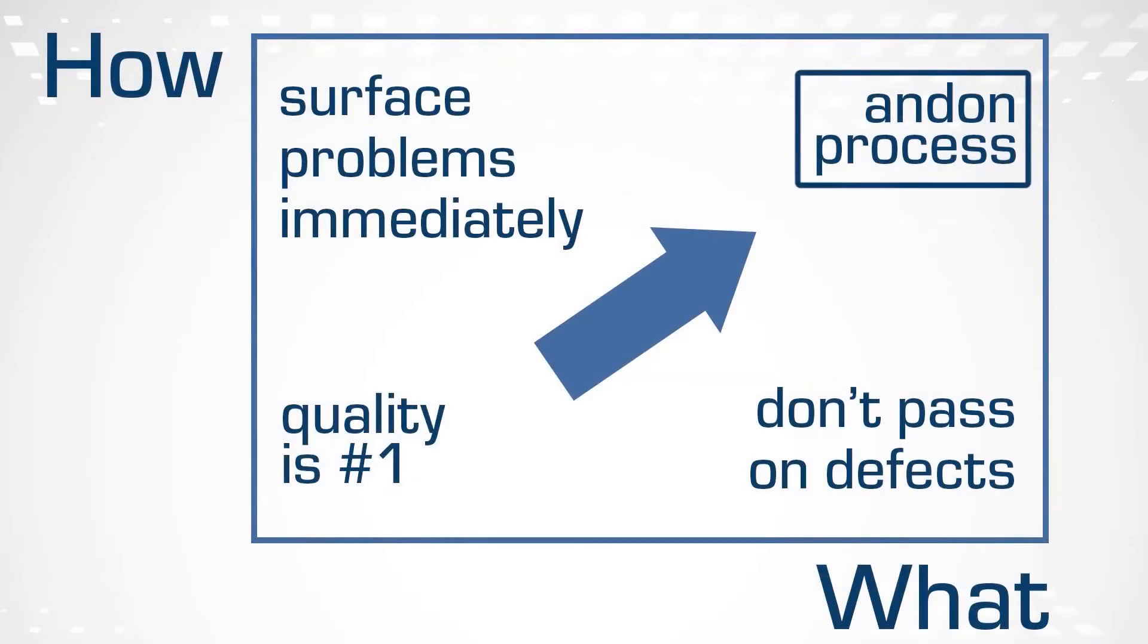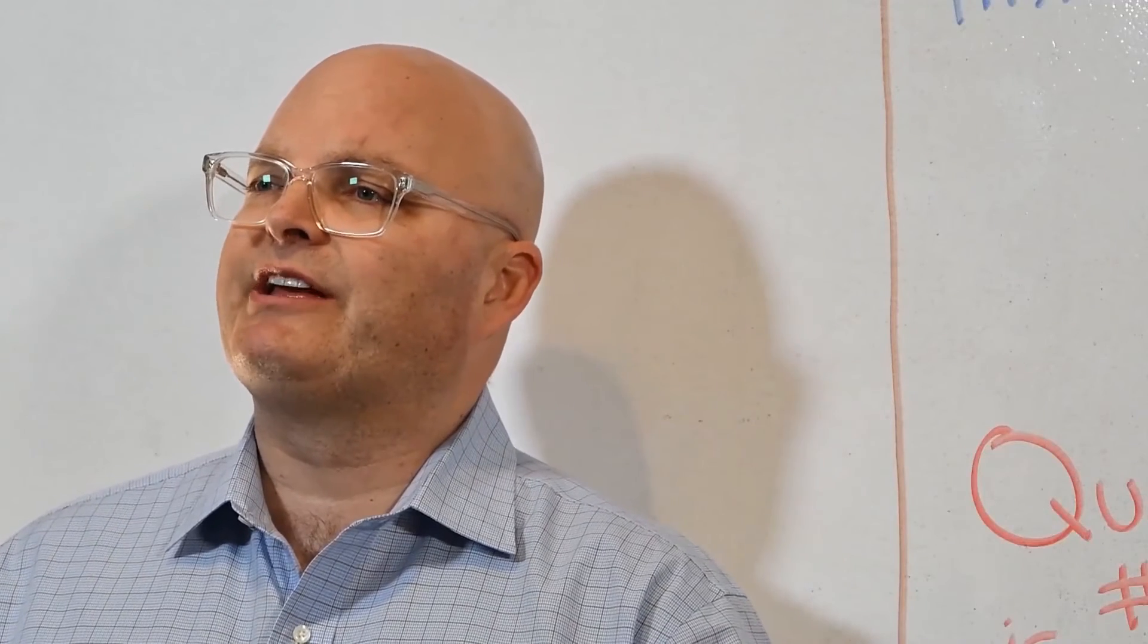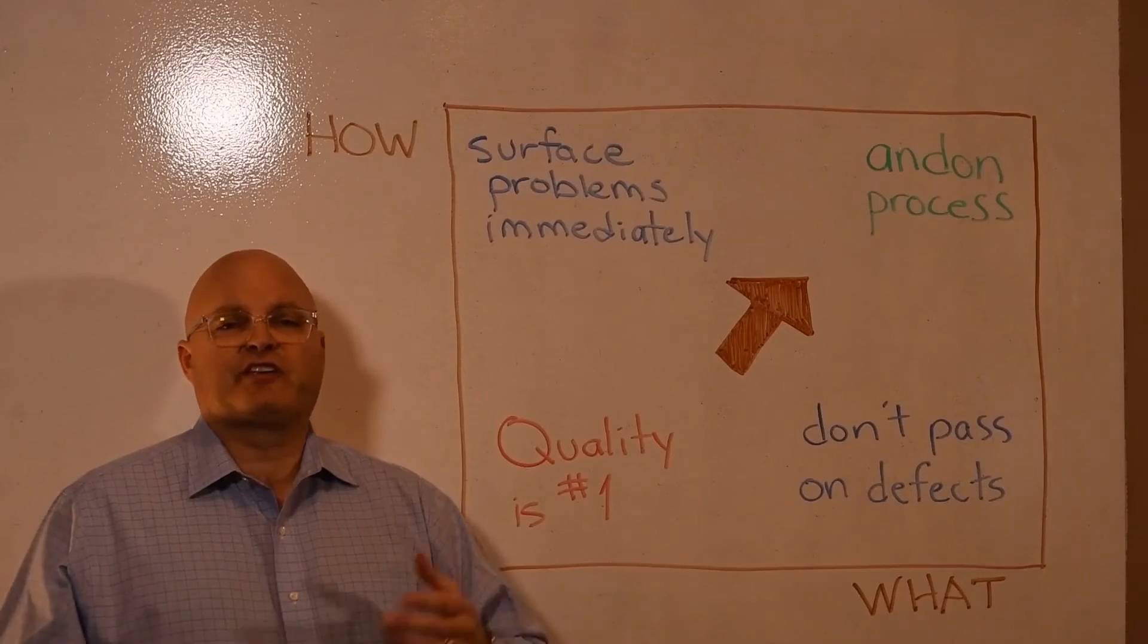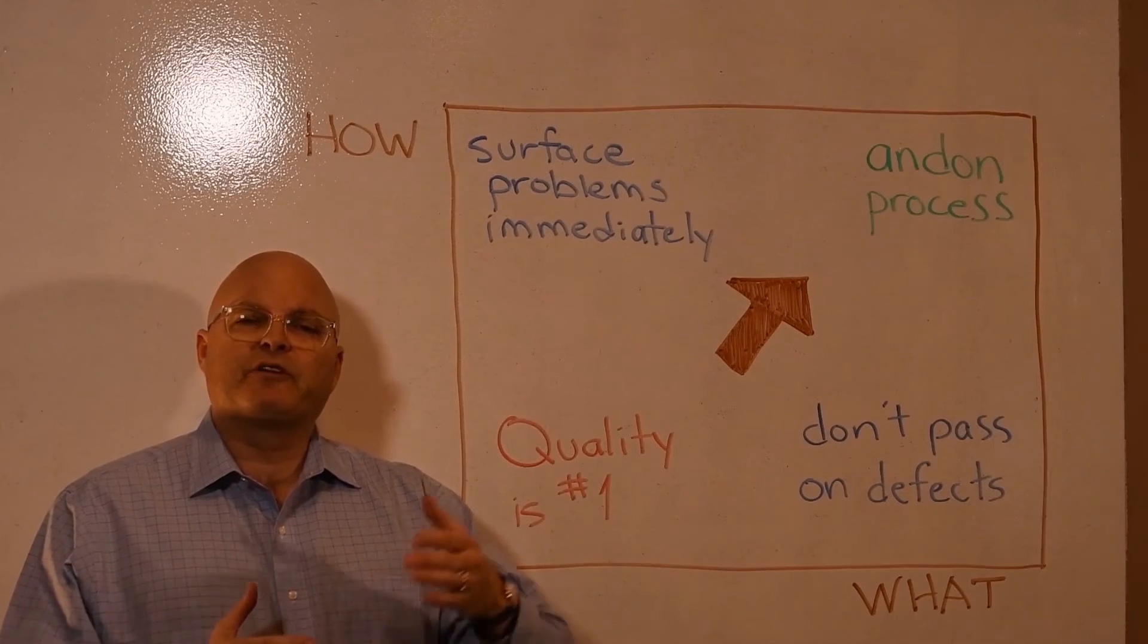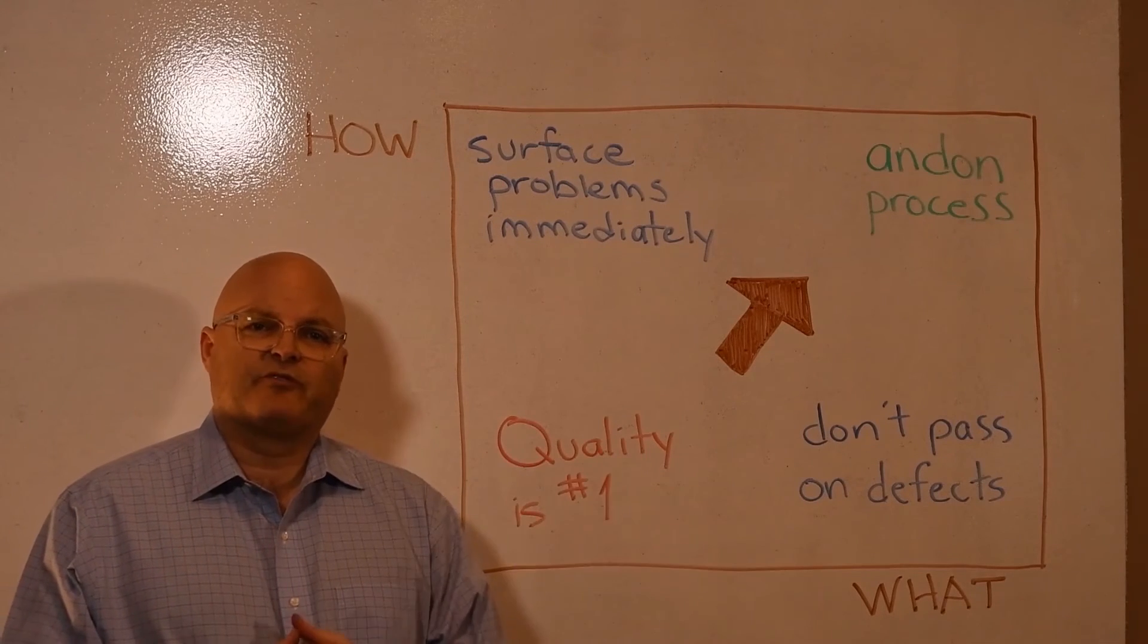You might get something like Toyota's example of the andon process. If within the work cycle they find a problem, which is clearly defined as an abnormality, they immediately surface that problem and it gets addressed before they allow that work to move on to the next segment of work.